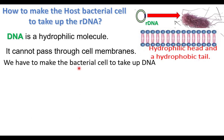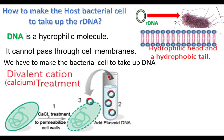So we have to make the bacterial cell take up DNA — we have to do something to the cell so that it will take up the foreign DNA. The cell is treated with a divalent cation — calcium ion treatment using CaCl₂ — which makes the cell membrane permeable to the rDNA. After divalent cation treatment, the host cells and rDNAs are incubated together on ice.